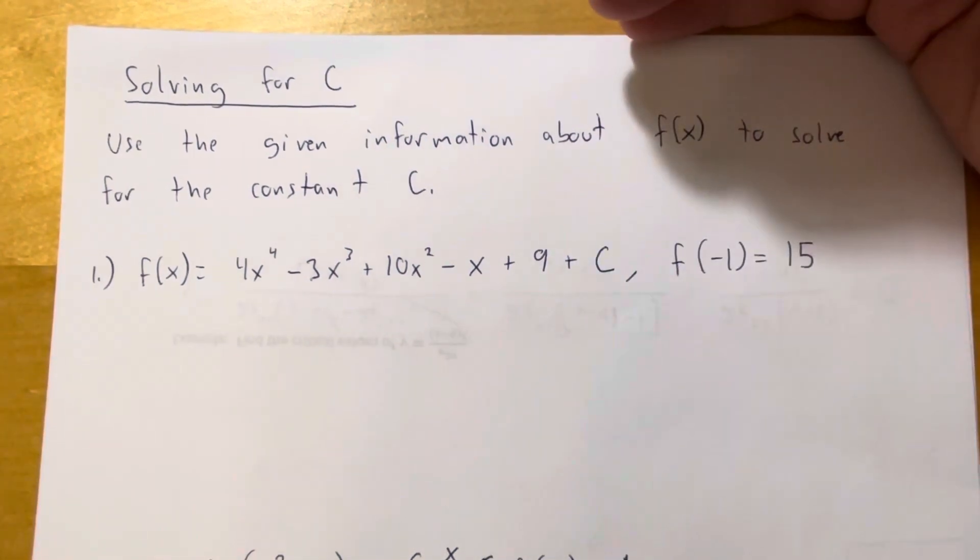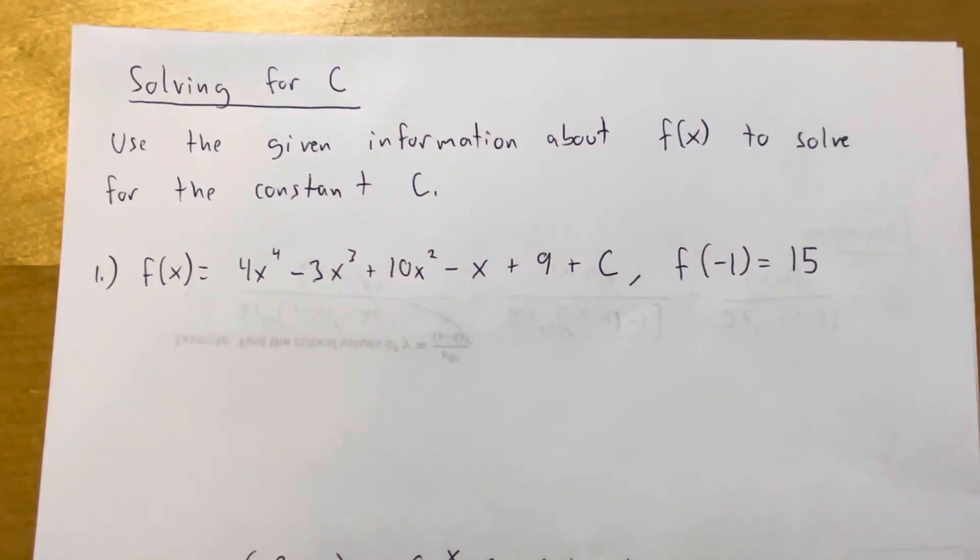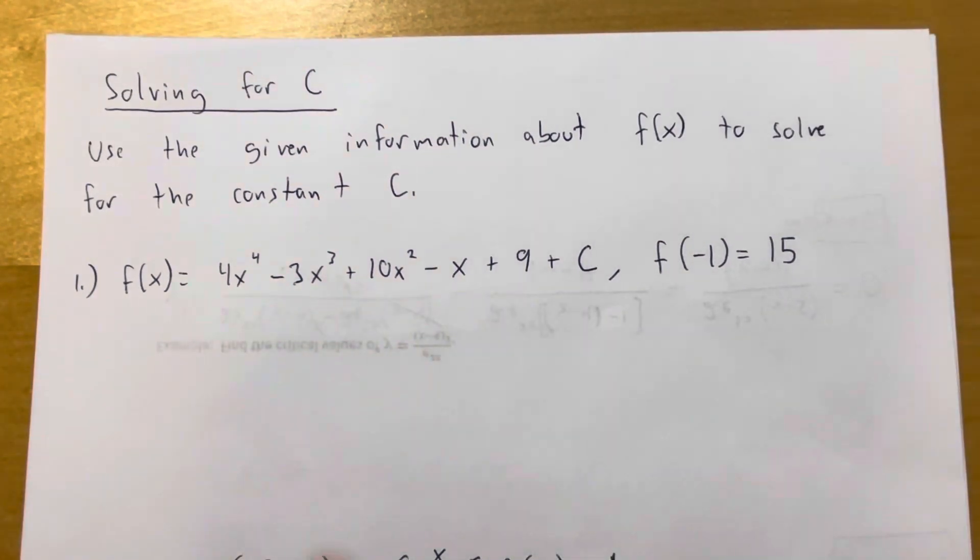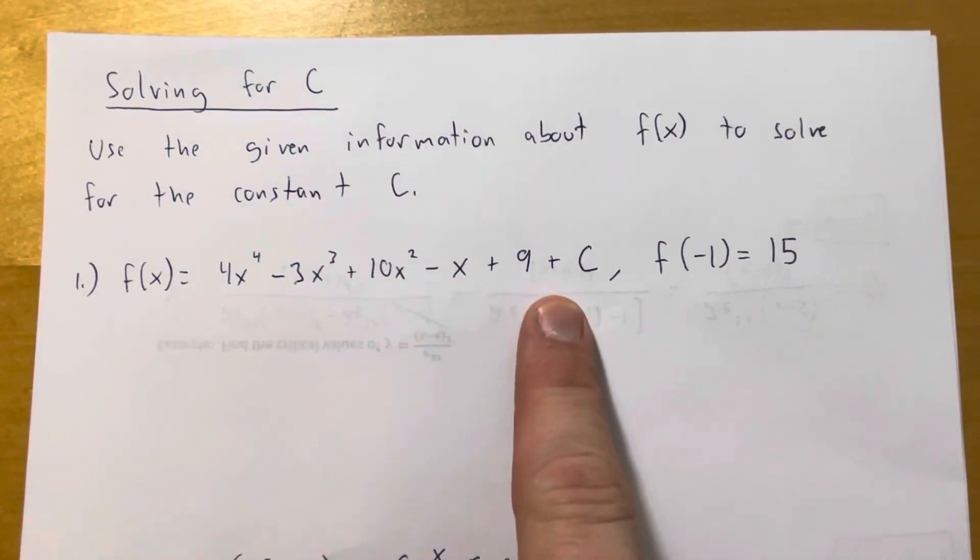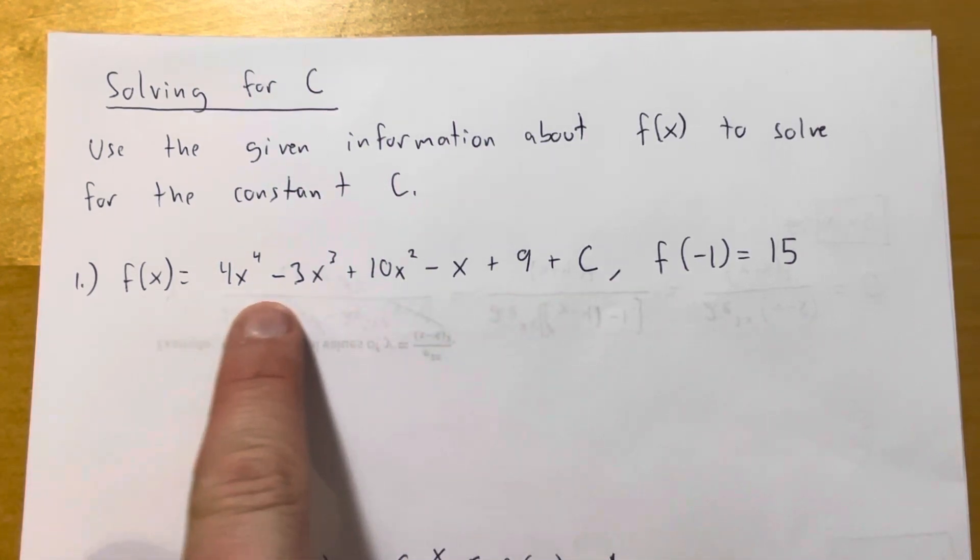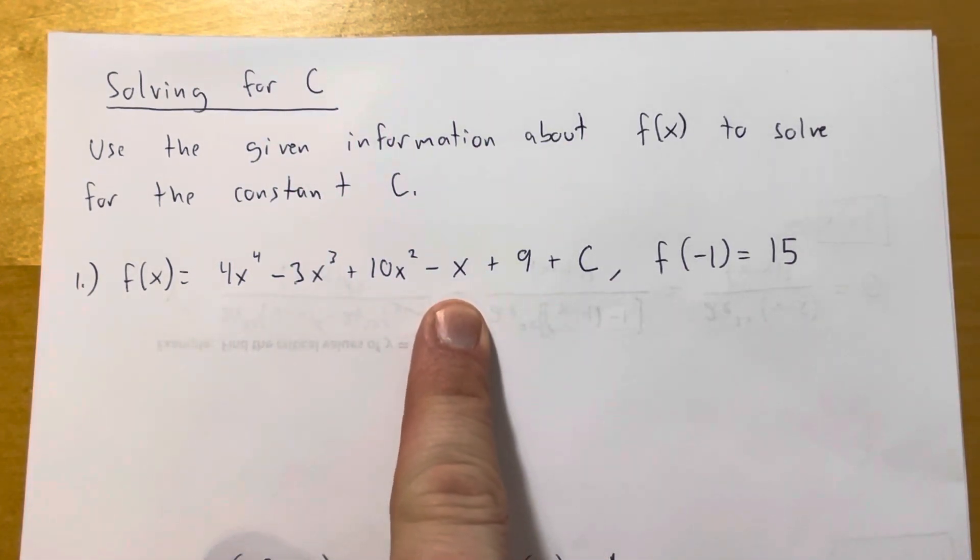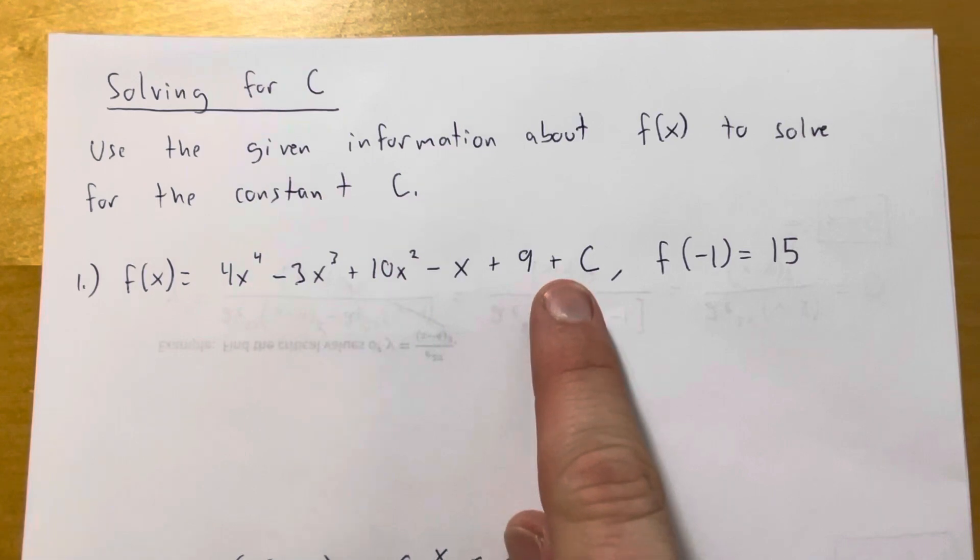I'm calling this solving for C. As you're going to see in section 4.1, we're going to end up with a lot of functions that are in this form: f of x equals some function of x, or whatever the variable happens to be, and then you're going to see a plus C showing up. In the parent class, we're going to call that the constant of integration, and we'll explain where it comes from there.